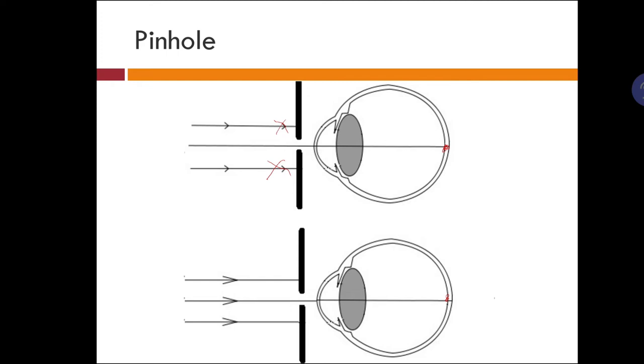So if by using a pinhole the vision of the patient improves, that means the patient is having a refractive error which can be hyperopia, myopia, or astigmatism.